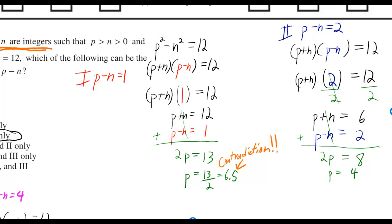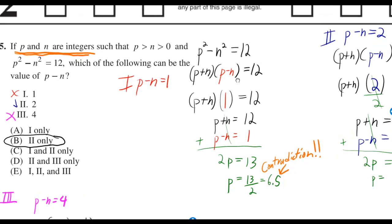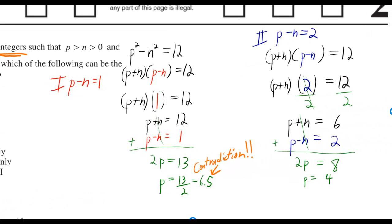We can do the same thing with p minus n being 2. That was the second choice right there. And then when you run through the steps, you get p is equal to 4. And that doesn't contradict.